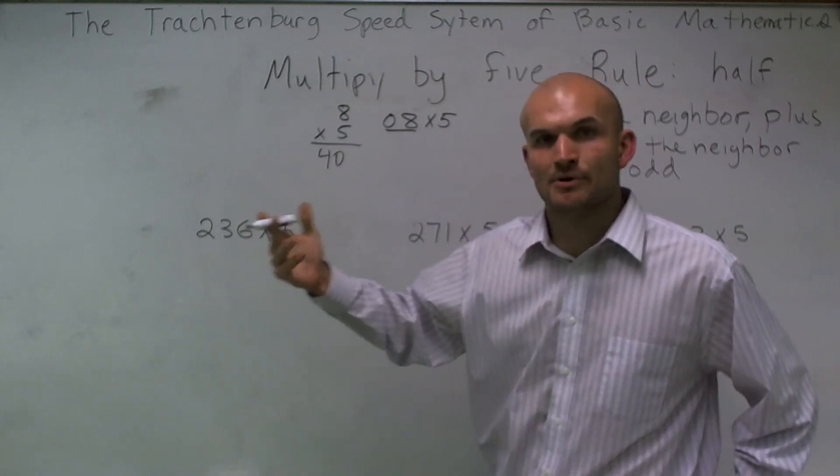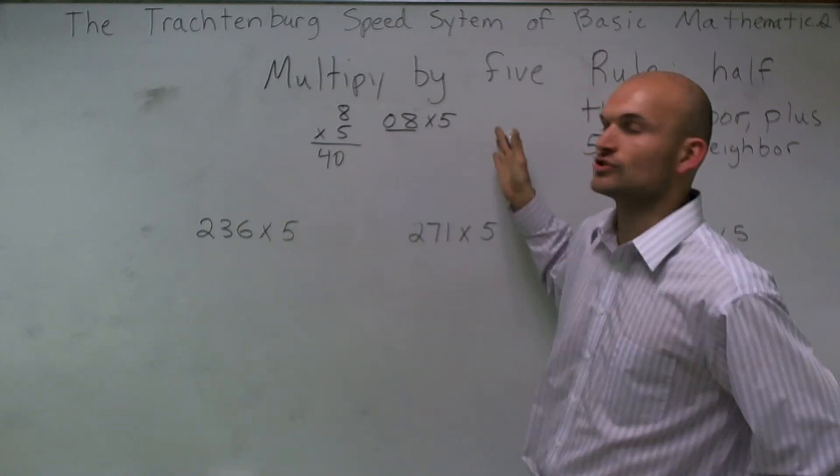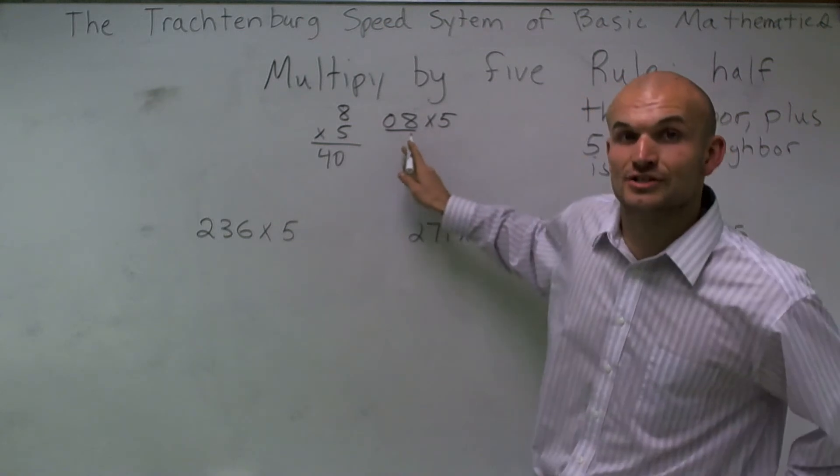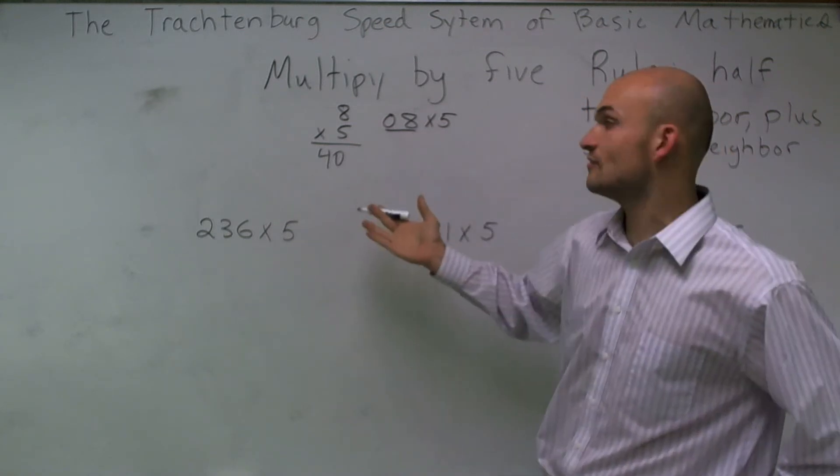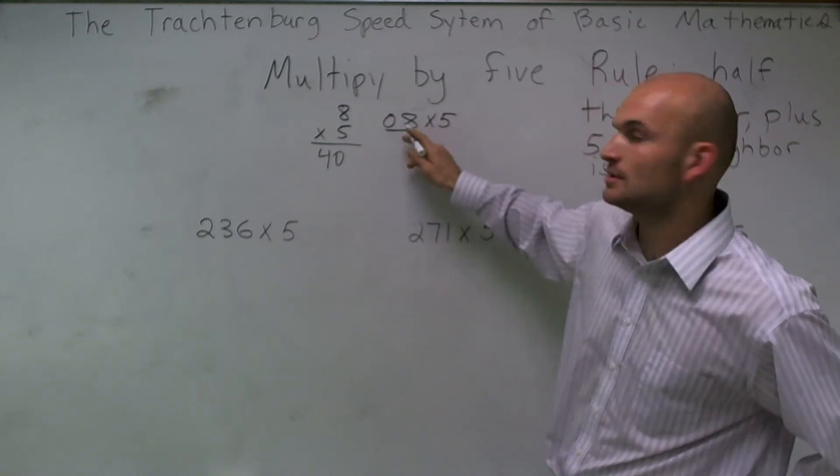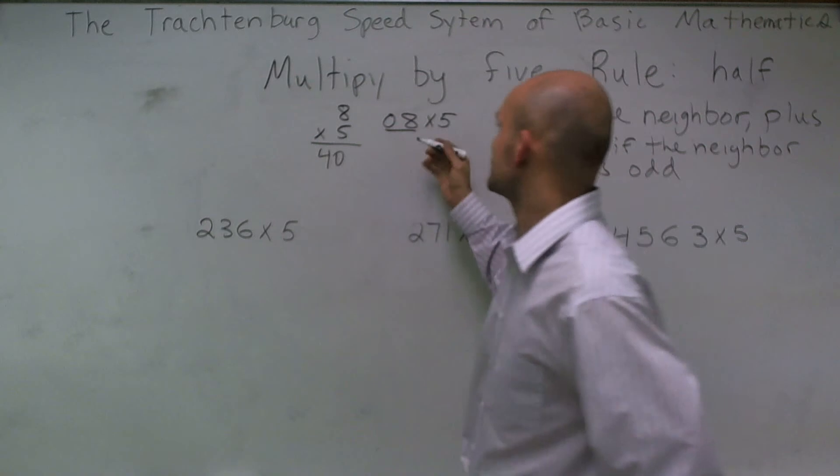So when we're talking about a neighbor, the neighbor is the number that's directly to the right of your number you're speaking with. So the neighbor of 8 is actually 0. There is no neighbor of 8. So half of my neighbor, 8, is actually going to be 0.